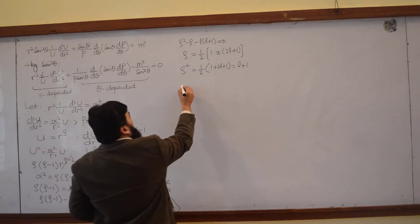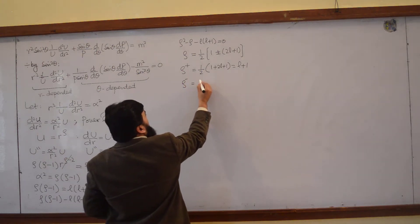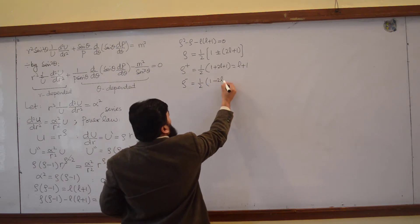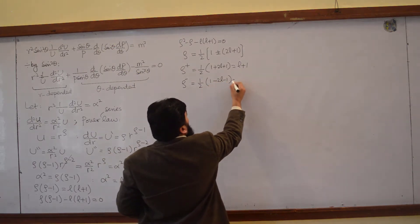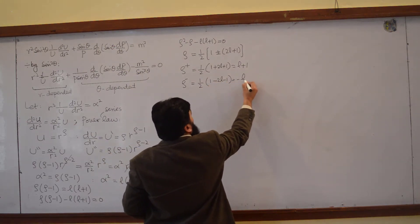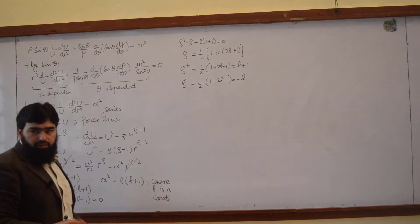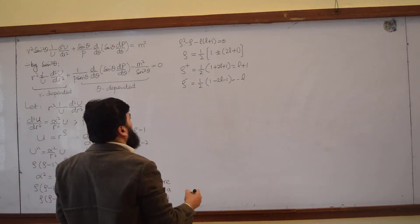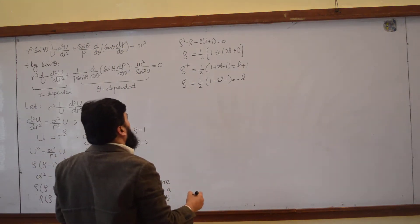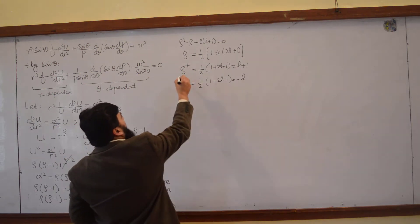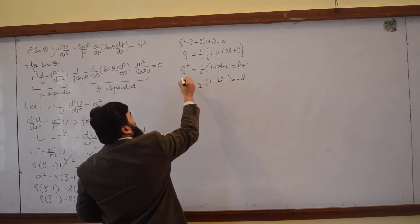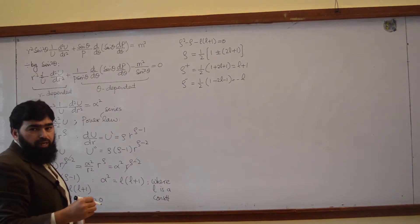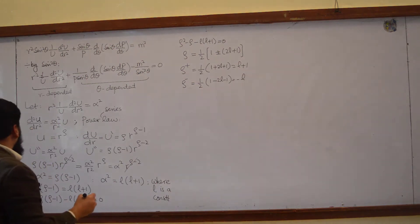Similarly, rho minus will be half times 1 minus 2l minus 1, and it will be equal to minus l. So we've got the two values of rho: rho plus and rho minus.